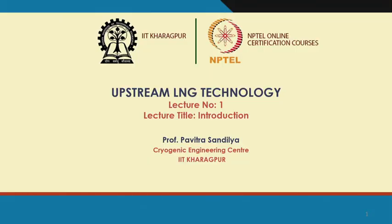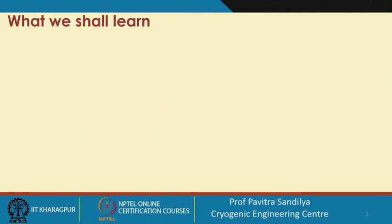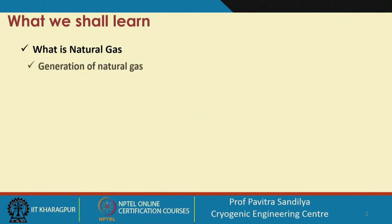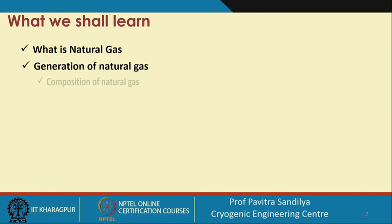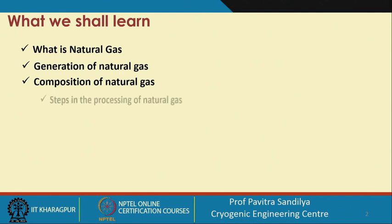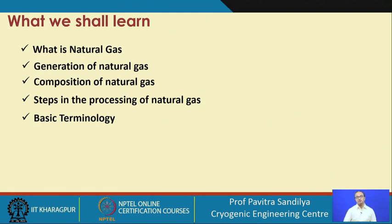What shall we learn in this chapter? We will learn about what is natural gas and how we define it. Secondly, how natural gas is produced in nature. Thirdly, what are the compositions of natural gas. This will be followed by the various steps needed for the processing of natural gas, ending with some basic terminologies used in the petroleum and natural gas industries.